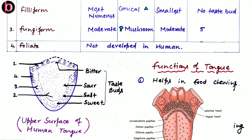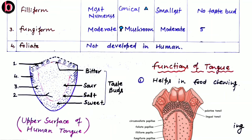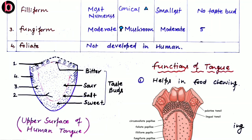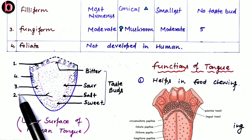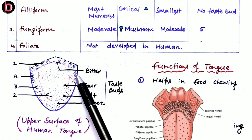Each fungiform papilla carries nearly 5 taste buds. The fourth type, foliate papillae, is not developed in human beings and is therefore non-functional for humans. So in the case of human beings, only three types of papillae are present: circumvallate, filiform, and fungiform. In the diagram showing the upper surface of the tongue, the four types are represented: circumvallate (circular), filiform (smallest), fungiform (mushroom-shaped), and foliate (non-functional in humans).